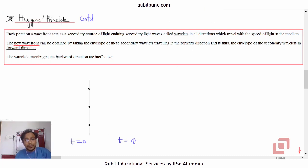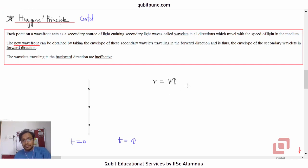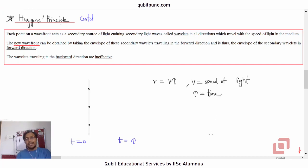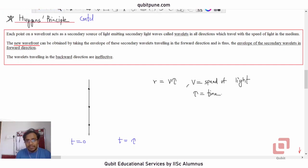The radius of the wavelet will be v·tau, because v is the speed of light in that medium and tau is the time — so the distance the wavelets travel during time tau will be v·tau.